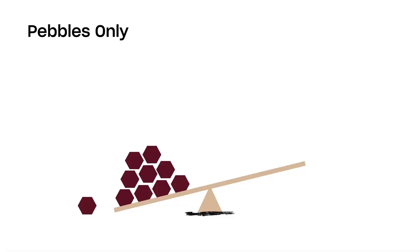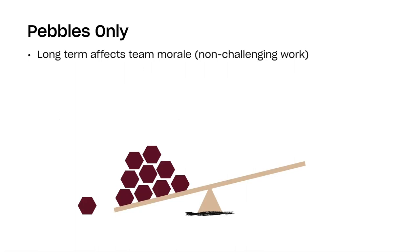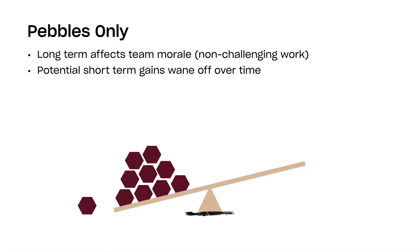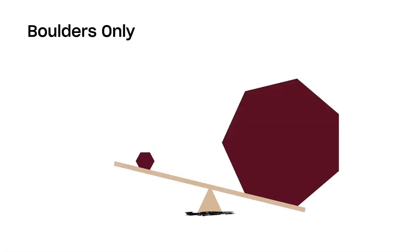If you focus too much on pebbles: your team — engineers, designers, product managers — won't be very excited. Team morale goes down because these aren't inspiring projects. You'll see results in the short term, but they'll wane, and it's extremely hard to shift user behavior in increments of 0.1. If you focus only on boulders: learnings and results are really delayed, it takes longer to design and build, and the market might shift under your feet while you're doing it. So mix boulders and pebbles for a healthy balance.